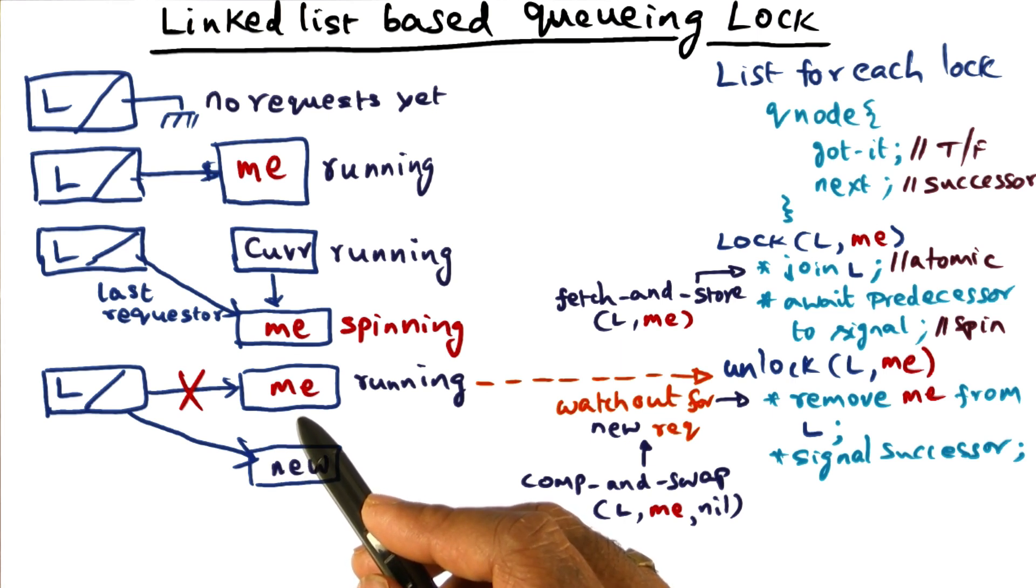And so what I have to do is do this compare-and-swap, and in the compare-and-swap, now it's going to return to me false, indicating that this particular operation failed. So once I know that this operation has failed, then I'm going to spin.